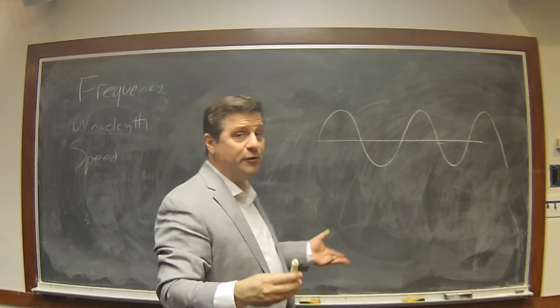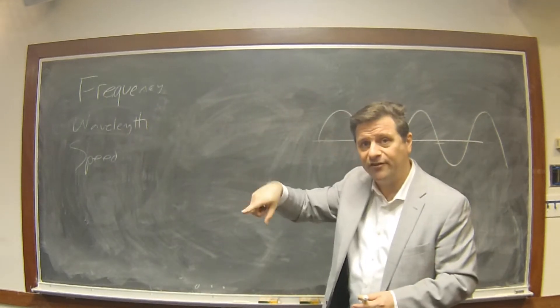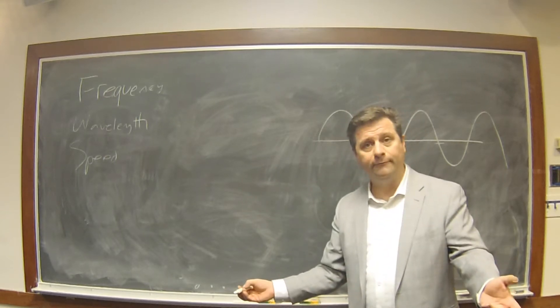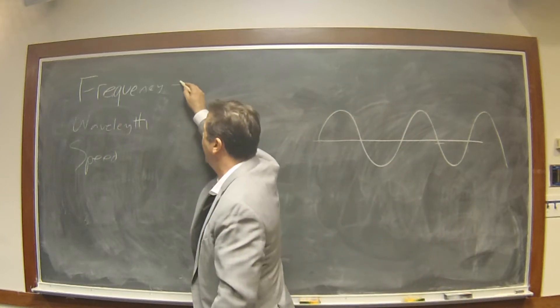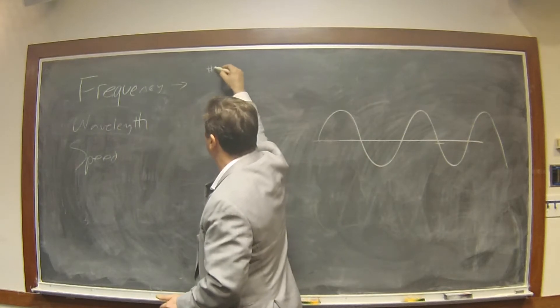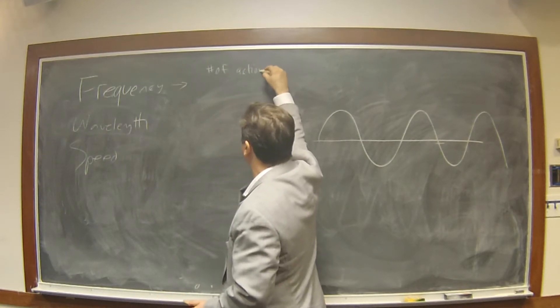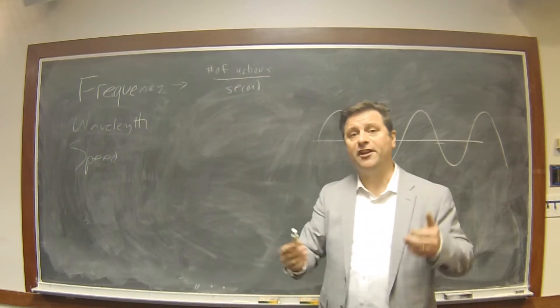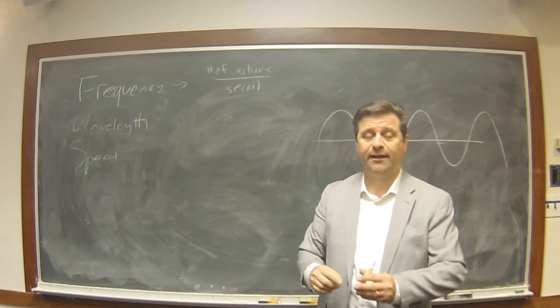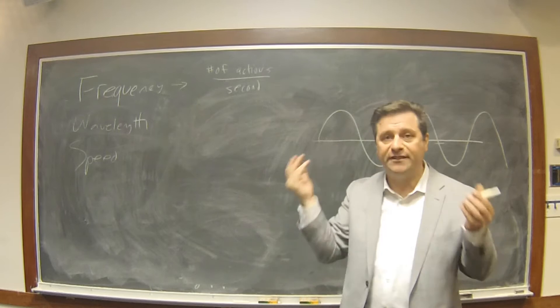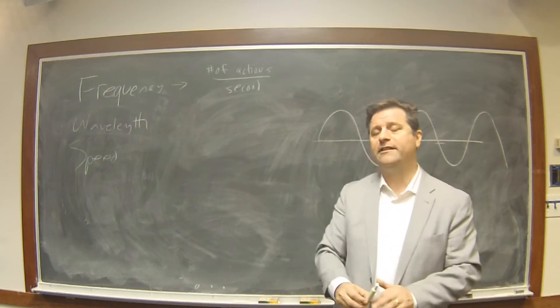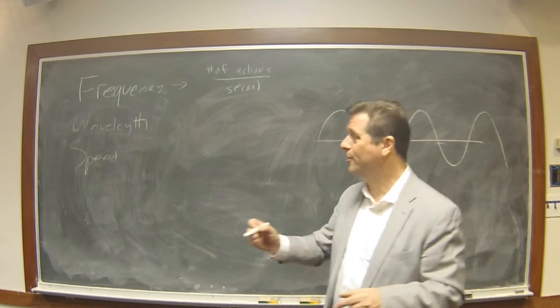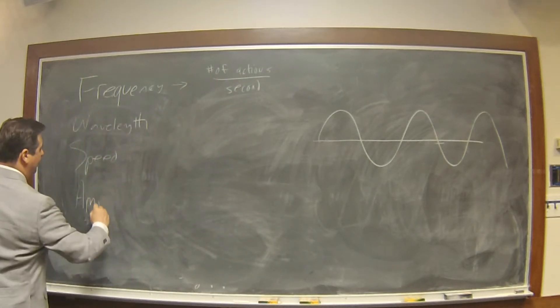Frequency, wavelength, and speed. Amplitude too. So there are four basic things. The first thing is frequency. Let's say we touch the surface of the water one time each second, then the frequency of that interaction will be one touch per second. Frequency has units of number of actions per second.